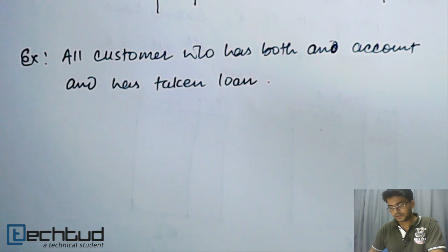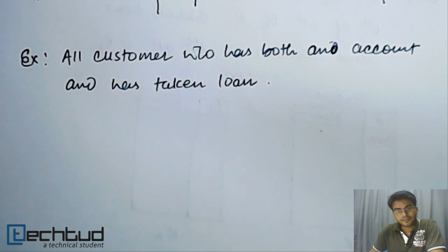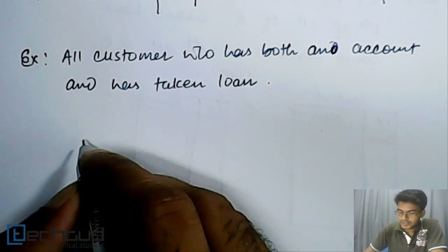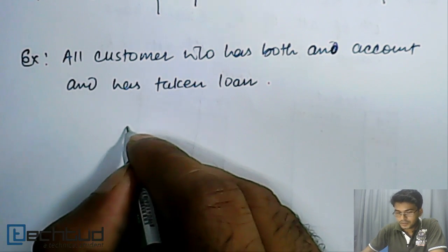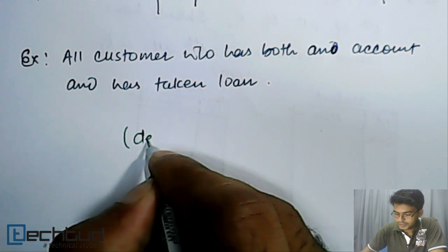If we have to find out the customer name, all the customers who have either a depositor account in the bank or have taken some loan, then what we will do? We will simply write from, let's say, depositor or borrower both. So from depositor...